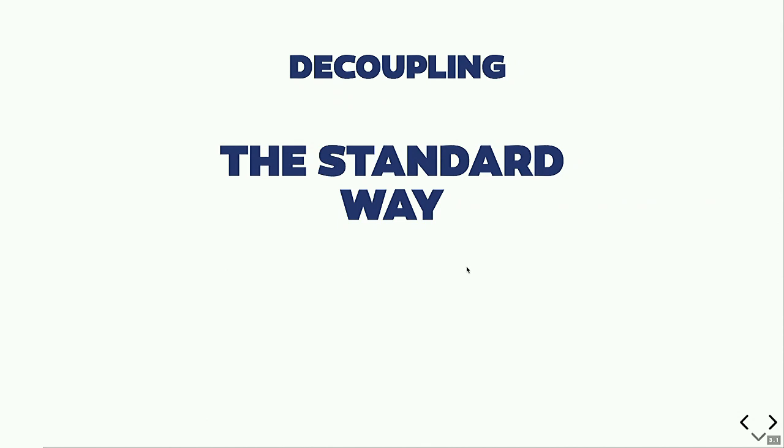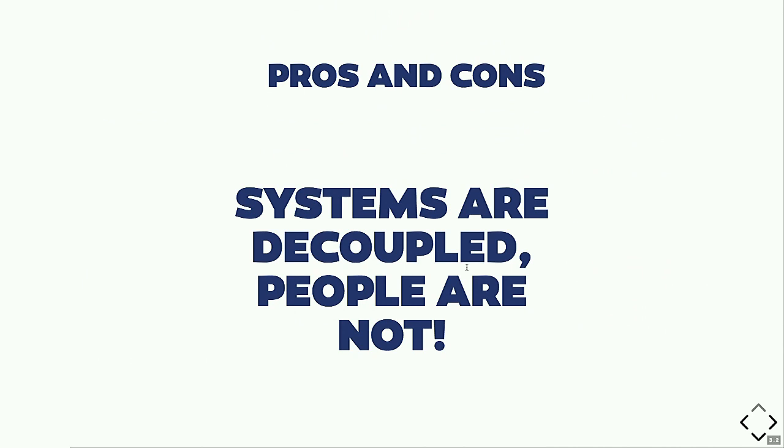Decoupling. The standard way of decoupling things is to separate front end stuff and back end via an API interface. This allows you to isolate front end development and the front end system from the back end system and to communicate between them via the API interface. But the bad thing about it — systems are decoupled, but people are not. Because front end developers still require to understand the back end of Drupal, still require to know its theme engine, because it's pretty hard to write a Twig template without knowing what data will be input to it.